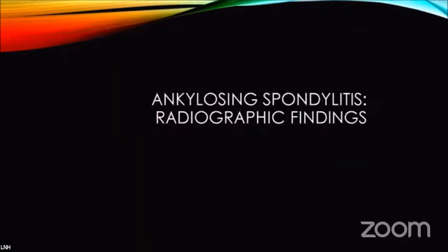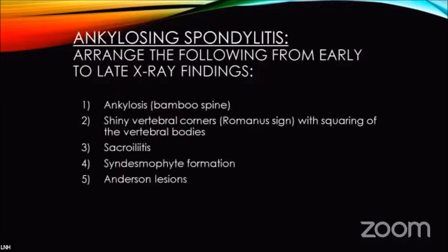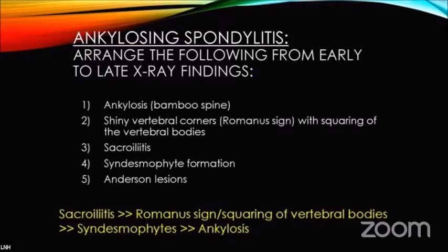Common radiographic findings on x-rays include ankylosis or bamboo spine, shiny vertebral corners or Romanus signs with squaring of the vertebral bodies, sacroiliitis, syndesmophyte formation, and Andersson lesions. The typical progression seen is: sacroiliitis first, then Romanus signs, then squaring of the body, then syndesmophytes, and finally ankylosis.